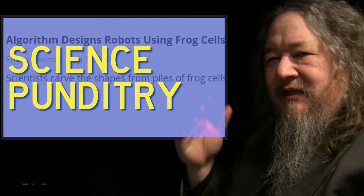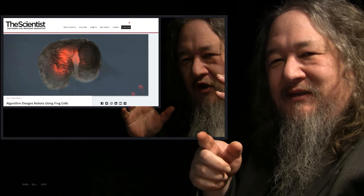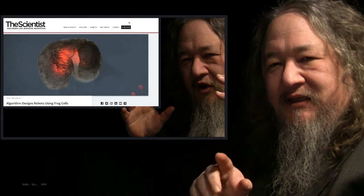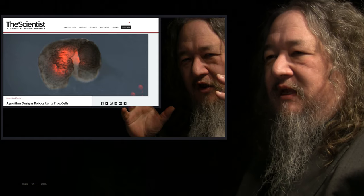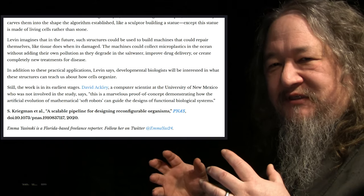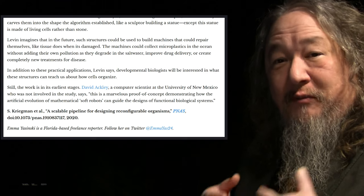An update on the science pundit that we mentioned last week. I got quoted in this scientist article about work by Michael Levin and Josh Bongard and their students. A marvelous proof of concept where they were using actual cells and putting them in configurations that had been developed by genetic algorithms for soft robots on a supercomputer.